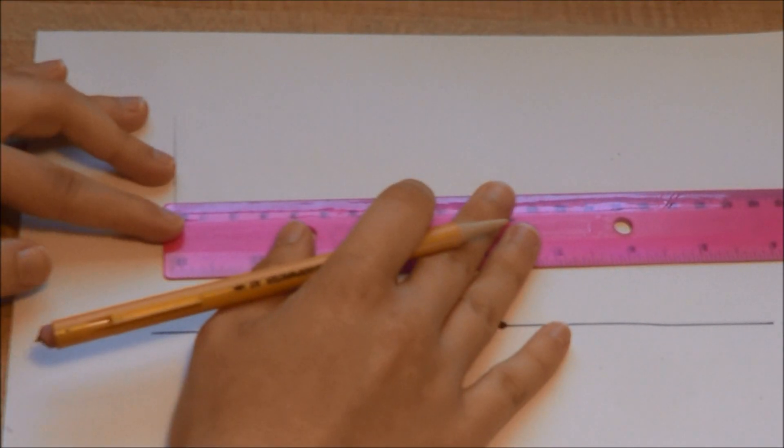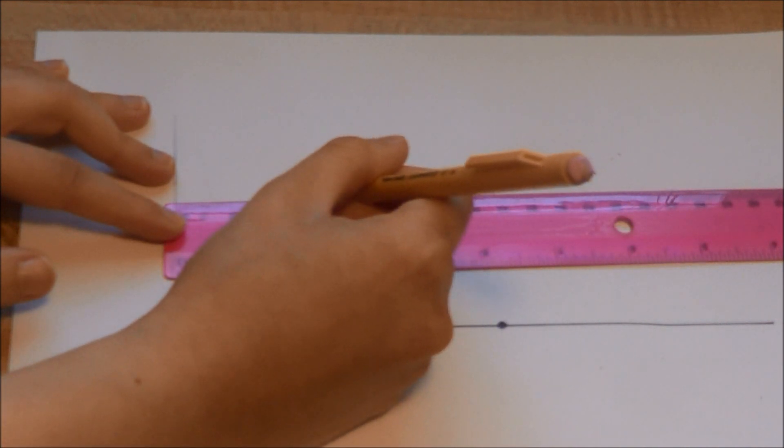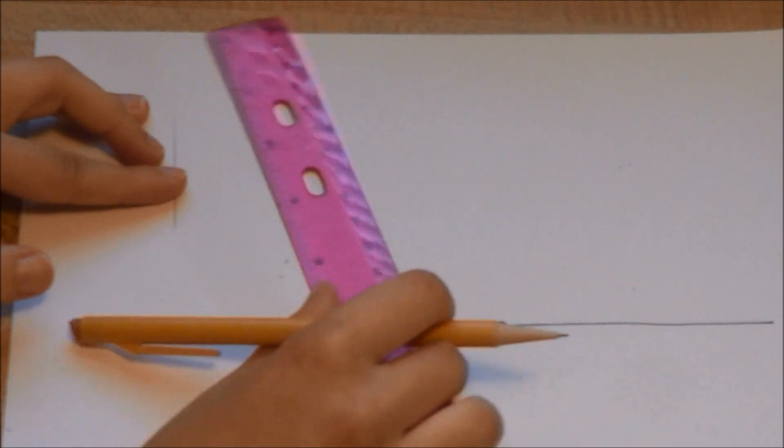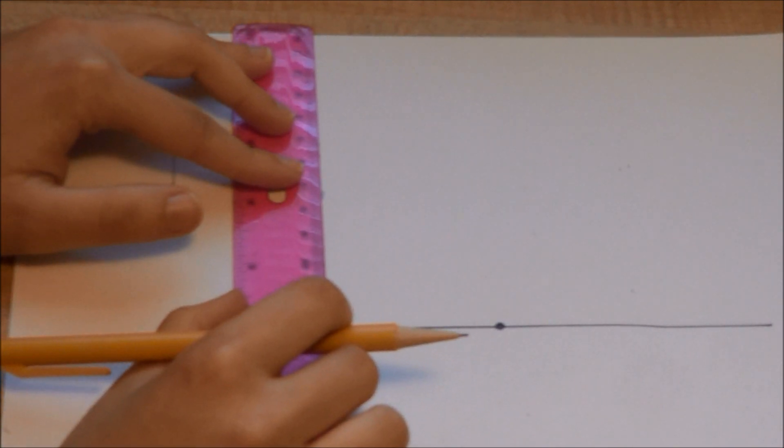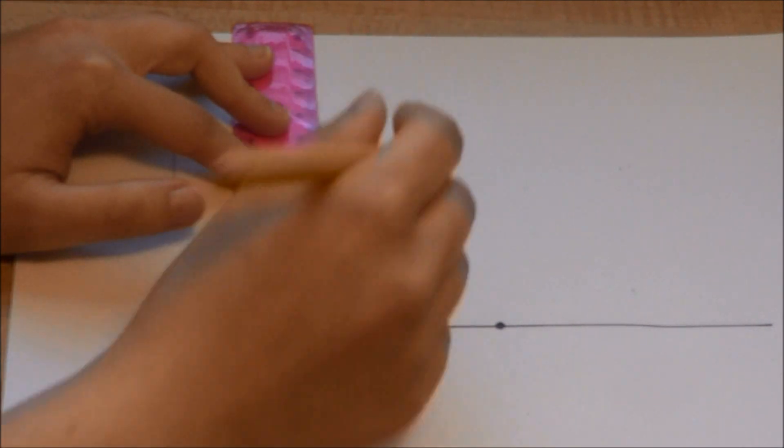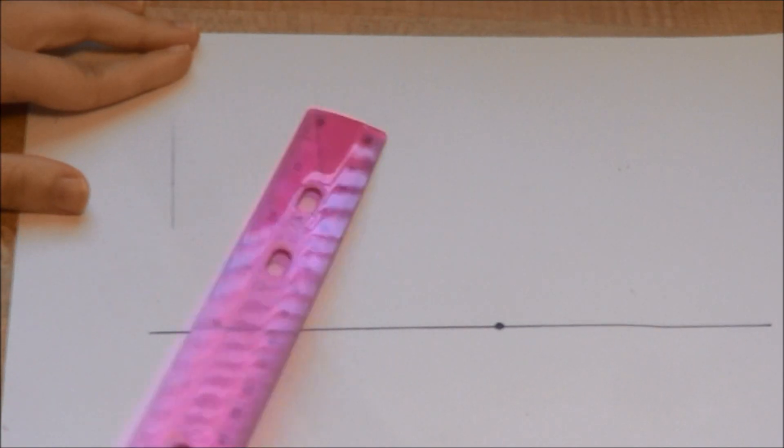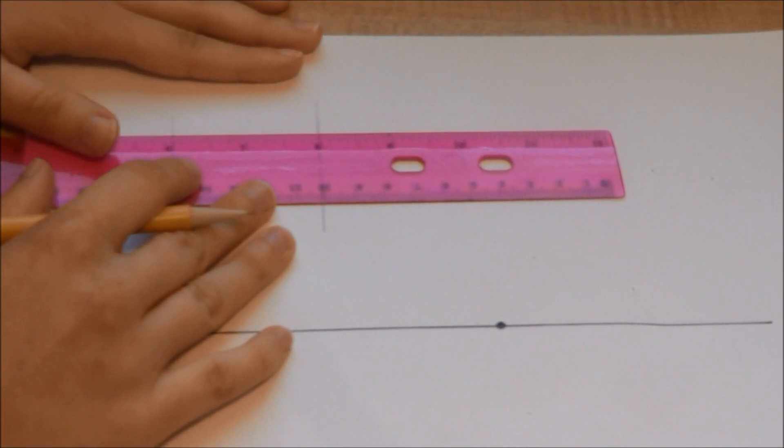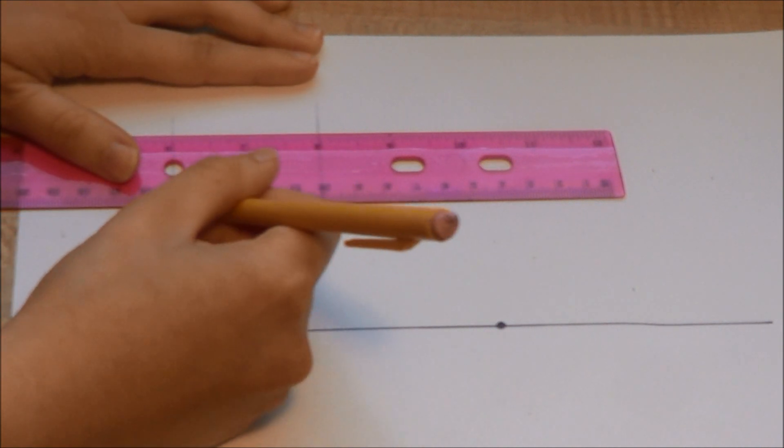Then you can use the first line to draw the second line. If you line up your ruler with these two lines, you can use the edges of the ruler to finish the rectangle.